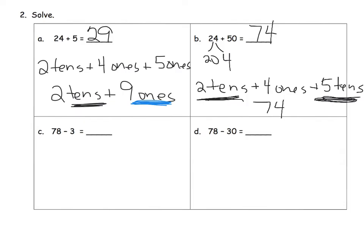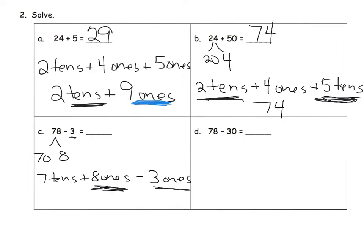Now we're going to practice subtraction of like units. We've got seven tens and eight ones, and we're going to subtract three — is that three tens or three ones? Well, that's three ones. So seven tens and eight ones, take away three ones: eight ones take away three ones gives us five ones. We have seven tens plus five ones, so our answer is seventy-five.